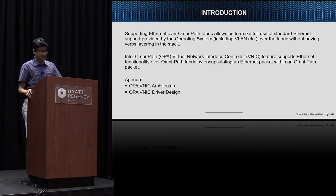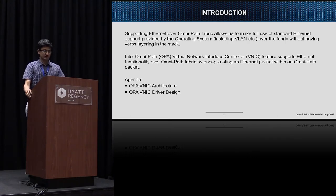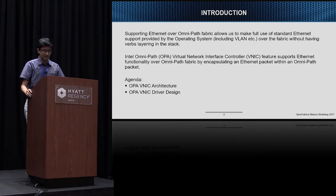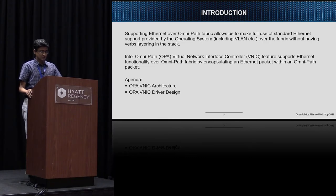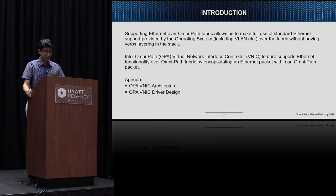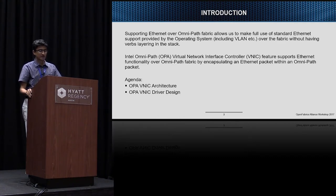Supporting Ethernet or Omnipath Fabric allows us to make full use of Ethernet support provided by the operating system, VLAN, etc., over the fabric without having any verbs layering in the stack. The Intel Omnipath Virtual Network Interface Controller feature supports this Ethernet functionality over Omnipath Fabric by encapsulating an Ethernet packet within an Omnipath packet.